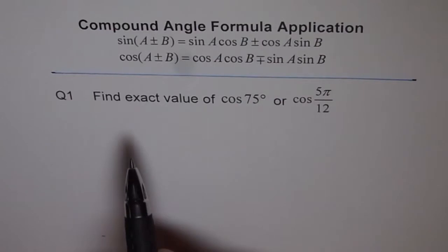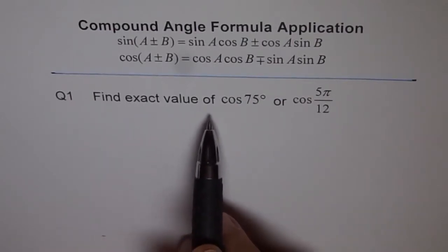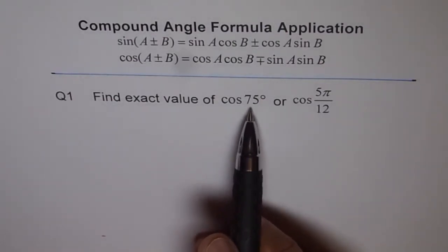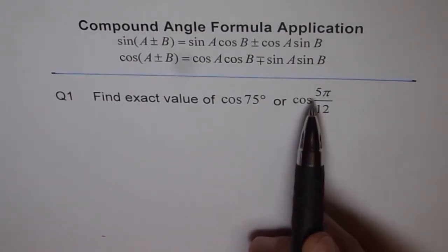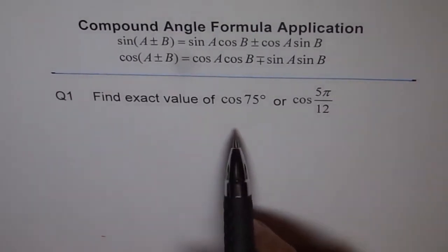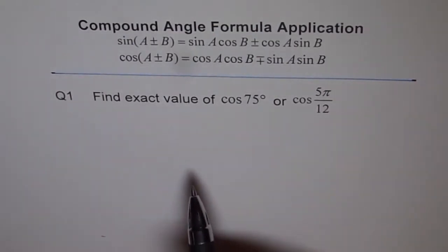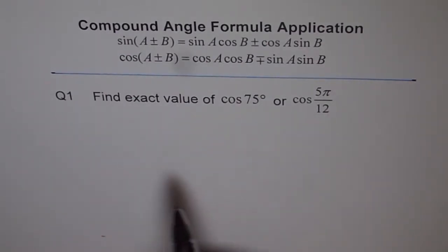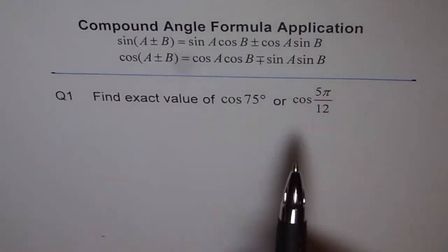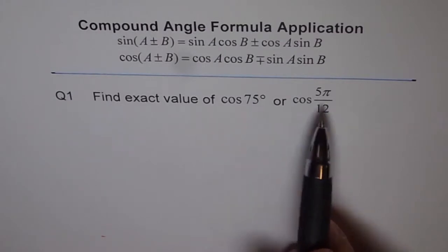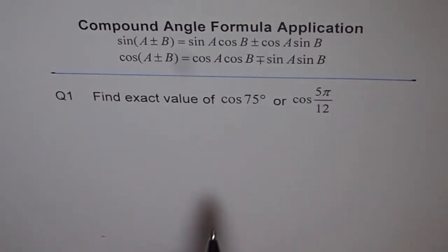Now, question number 1 is find exact value of cos 75°. For those students who are doing radians, I have written 75° in radians which is 5π/12. So, I will solve my questions in degrees here and that will give you an equivalent for the radians, right? The solution is almost the same except for units may be written in a different way. 75 degrees is the same as 5π/12 radians, right?